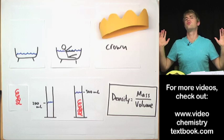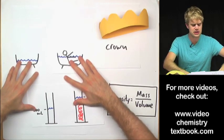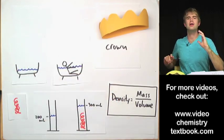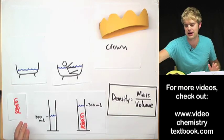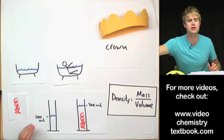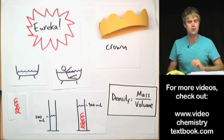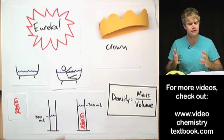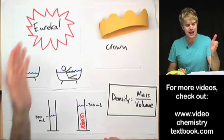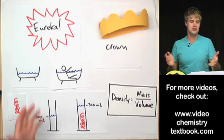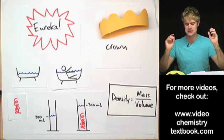So Archimedes realizes that he's made this amazing discovery and he jumps out of the bath. He doesn't even have time to put clothes on he's so excited and he runs through the streets of Syracuse shouting Eureka which is a Greek word that means I found it, I figured it out. Now people use Eureka all the time to say just that, I figured it out, it makes sense now.